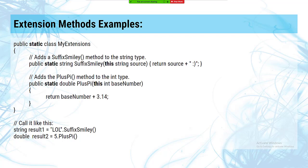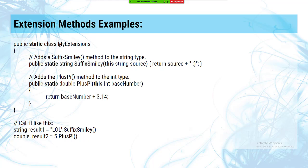In the example, one method is glued onto a string and one onto an int. The type of the first parameter determines which objects get that method, in any file that has a using directive including this class's namespace. The namespace determines who has access, and the type determines which objects get the method.